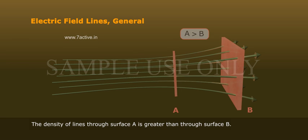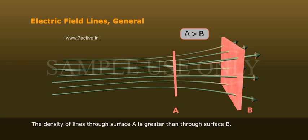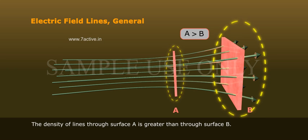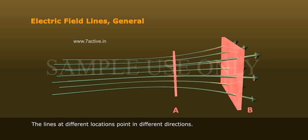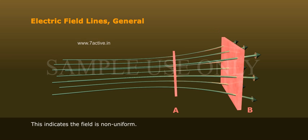The density of lines through surface A is greater than through surface B, so the magnitude of the electric field is greater on surface A than B. The lines at different locations point in different directions, which indicates the field is non-uniform.